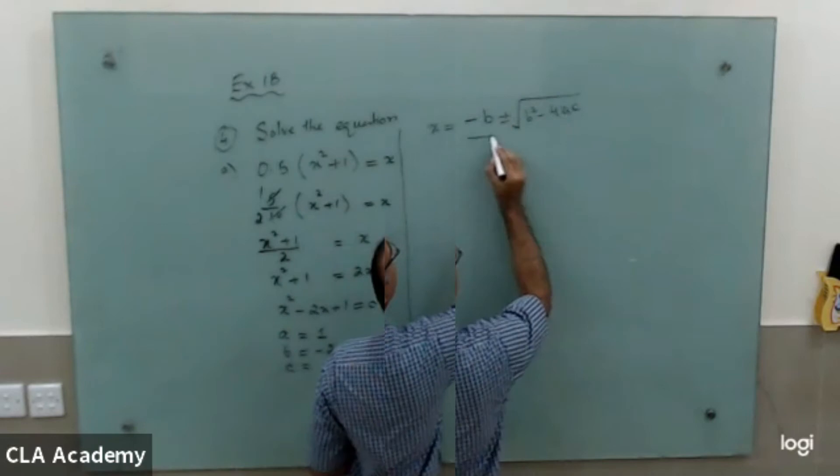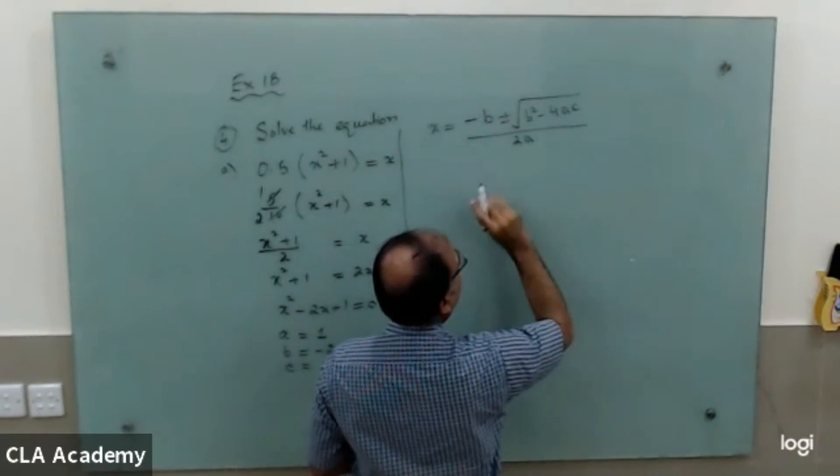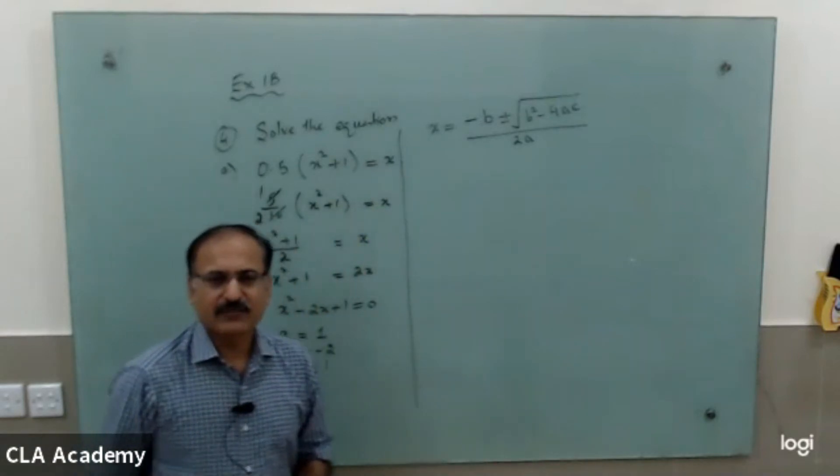The quadratic formula is minus b plus or minus square root of b squared minus 4ac over 2a. Very good. This is the quadratic formula.